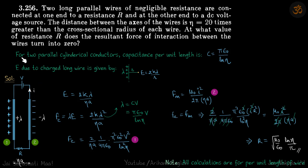We can recall that for two parallel cylindrical conductors, capacitance per unit length is pi epsilon naught by ln eta. This we have derived in capacitors. And electric field due to a charged long wire is given by, at a distance R, the electric field due to a long wire with a linear charge density lambda is 2k lambda by R. So we are going to use these two results which we have seen before.